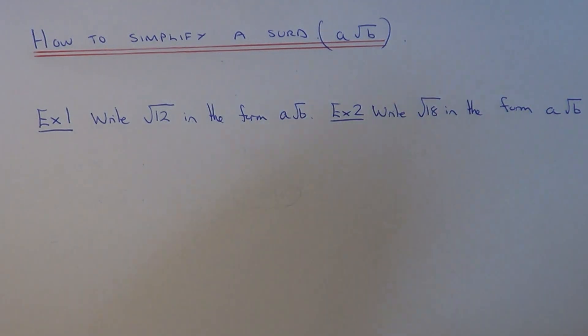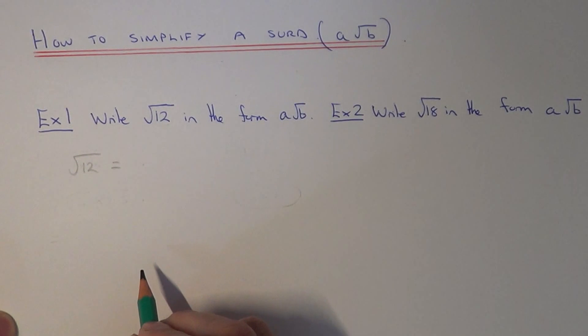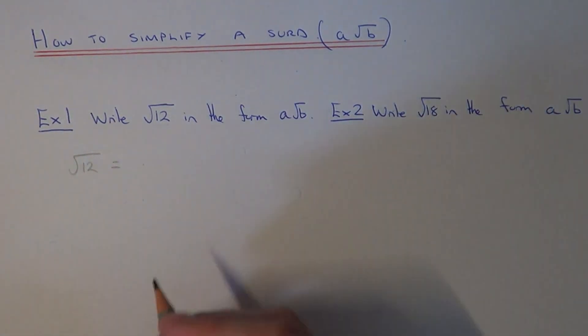So the pair that we need for root twelve would be four times three, because four times three is twelve and four is the square number.